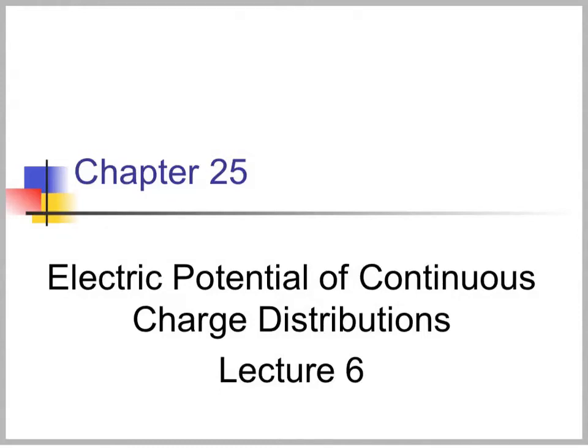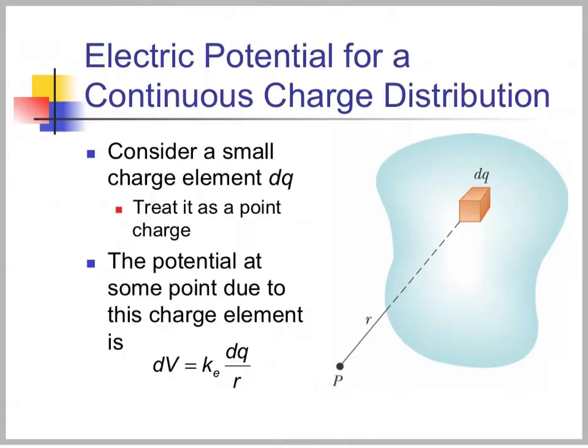This is Physics 2120, and today we're going to talk about finding the electric potential from continuous charge distributions, just like we did with electric field.